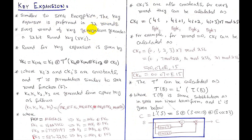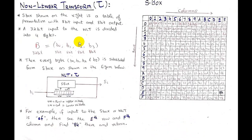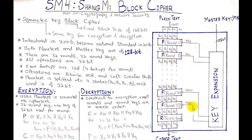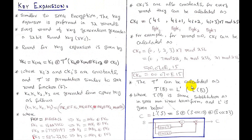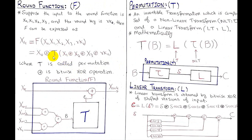Key expansion is also performed in 32 rounds, just like encryption. Every round gives us a single round key: rk0, rk1, rk2, and so on. The round function for key expansion is similar: rk of i equals k of i XOR the key round output. The inputs are k of i, k of i+1, k of i+2, k of i+3, and the constant ck of i. The key difference is the use of T' (T-dash) instead of T.